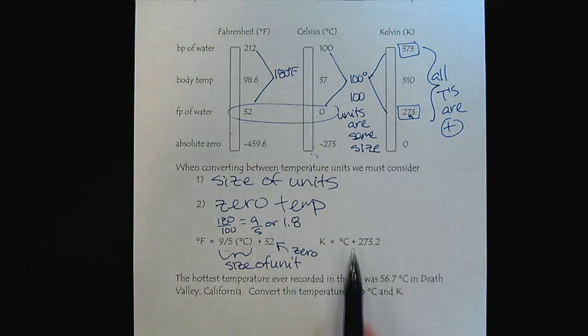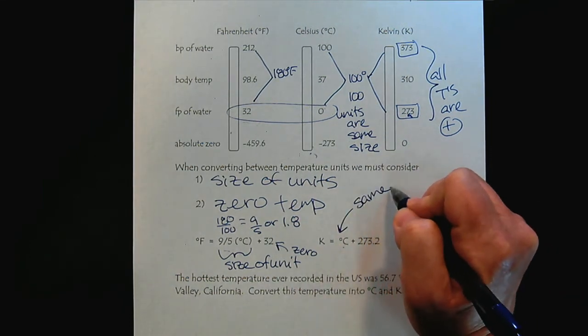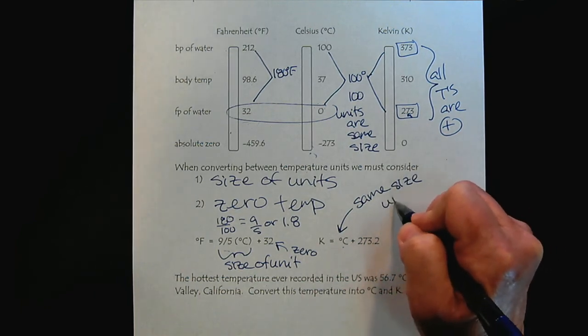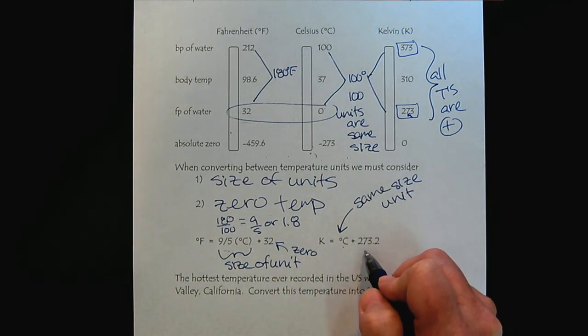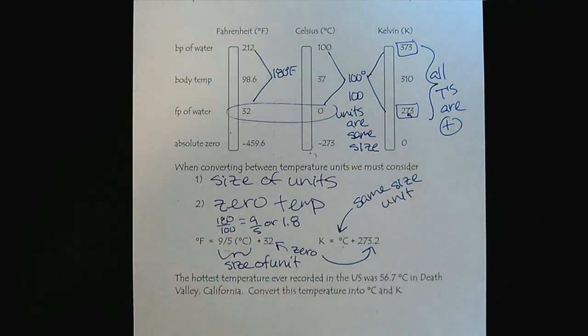When we are going from Celsius to Kelvin, notice that because we have the same size units, we don't have to worry about making an adjustment. We simply allow for the differences in the location of zero on the scale.